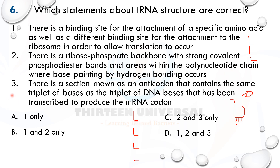Statement three says there is a section known as the anticodon that contains the same triplet bases as the triplet of DNA bases that was transcribed to produce the mRNA codon. The anticodon is similar in sequence to a DNA base triplet because both are complementary to the mRNA codon, however they are not the same — tRNA contains uracil while DNA contains thymine, and they have different pentose sugars. Statement three is incorrect. So only statements one and two are correct.